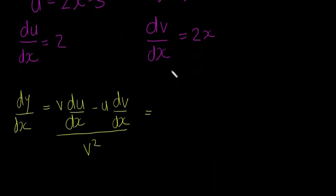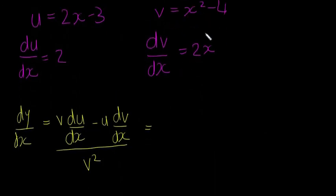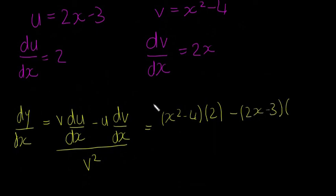So our v is going to be x squared minus 4, so we're going to stick that in, x squared minus 4, and our du/dx is going to be 2, minus our u, which is 2x minus 3, and our dv/dx, which is 2x,